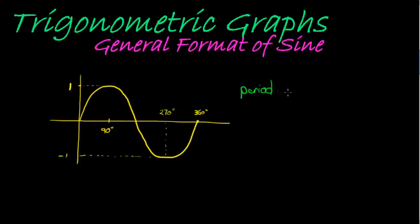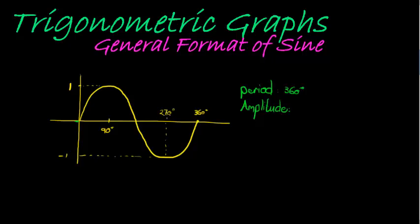The period is 360 degrees. Now, the maximum height reached is called the amplitude — I didn't mention that in the previous video, but I'm mentioning it here. The amplitude is this maximum height reached, which in this case is 1.